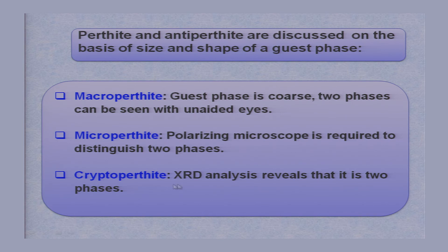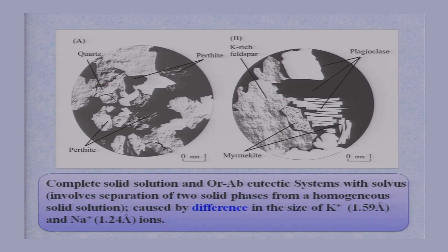Cryptoperthite: the two phases can be distinguished only by X-ray diffraction techniques. X-ray diffraction analysis reveals such a texture; we call it cryptoperthite — ultra-fine-grained crystals that cannot be seen under the microscope, but can be distinguished with the help of X-ray diffraction patterns.